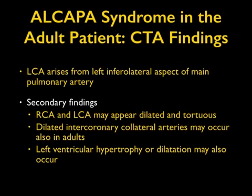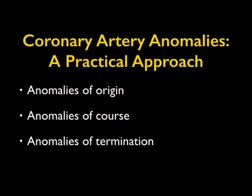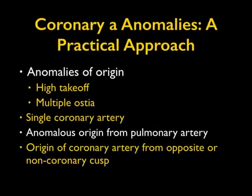In L-CAPA syndrome, the main finding is the left coronary arising from the inferior lateral aspect of the main pulmonary artery. Secondary findings include a dilated and tortuous right coronary, dilated intercostal collaterals, and left ventricular hypertrophy or dilatation. CT and MR are both excellent techniques for making the diagnosis. When evaluating coronary artery anomalies, always think about origin, course, and termination — and where the anomalous origin from the pulmonary artery comes from.